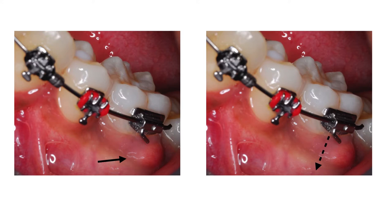The patient, a 16-year-old male, presented with a non-vital mandibular left first molar during orthodontic treatment due to a leaking occlusal restoration. The buccal gingiva was swollen and he presented with a periodontal pocket of about 11 mm in this area, as indicated by the arrows on the slide.